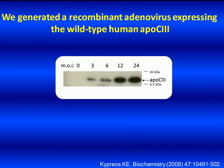To confirm that our virus expresses ApoC3, human astrocytoma HDB13 cells that do not synthesize endogenous ApoC3 were infected with the recombinant adenovirus ADGFP C3 at multiplicities of infection of 0, 3, 6, 12, and 24. Western blot analysis of the medium from the infected cultures showed that human ApoC3 is secreted efficiently in the culture medium 24 hours post-infection, as shown in this figure. Analysis of the culture medium by sandwich ELISA confirmed that ApoC3 is secreted in the media of the infected cultures.